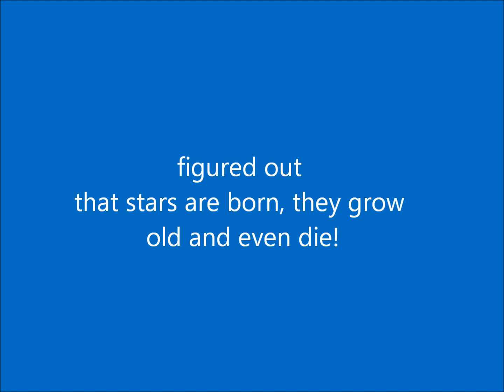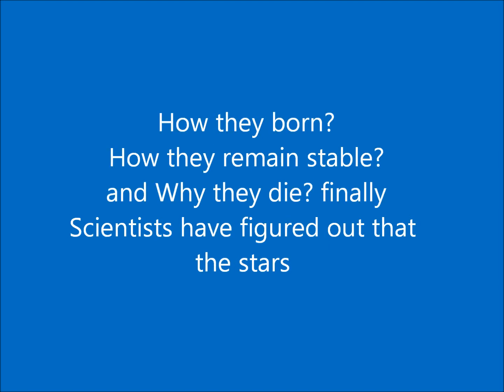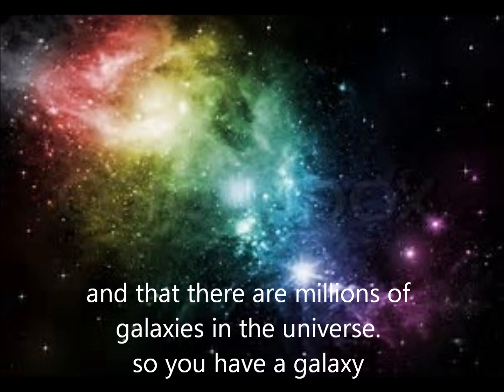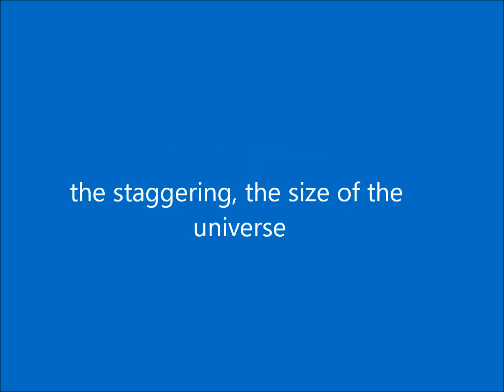During the last hundred or so years, people have even figured out that stars are born, they grow old, and they even die. You will understand step by step how they are born, how they remain stable, and why they die. Finally, scientists have figured out that stars are actually part of larger groups called galaxies, and that there are millions of galaxies in the universe, each containing millions of stars — you can imagine the staggering size of the universe.